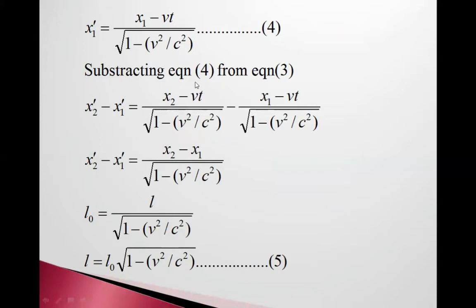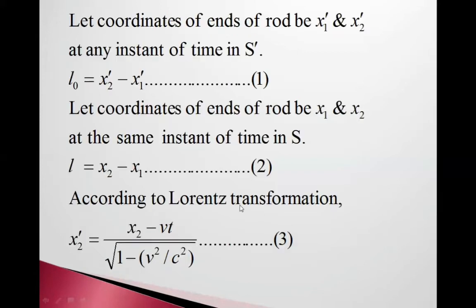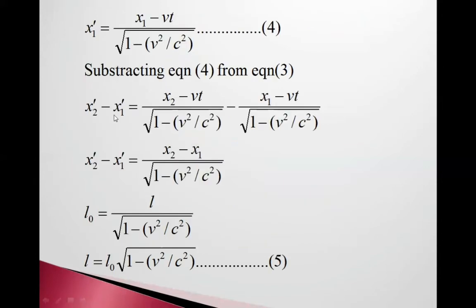Subtracting equation 4 from equation 3, we get x2' minus x1' equals (x2 minus Vt) upon square root (1 minus V squared upon C squared) minus (x1 minus Vt) upon square root (1 minus V squared upon C squared).